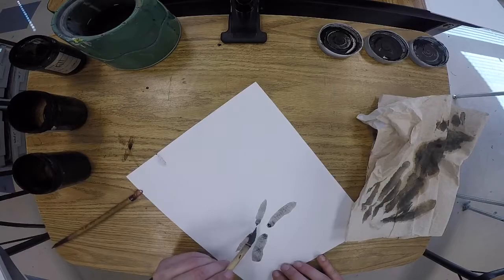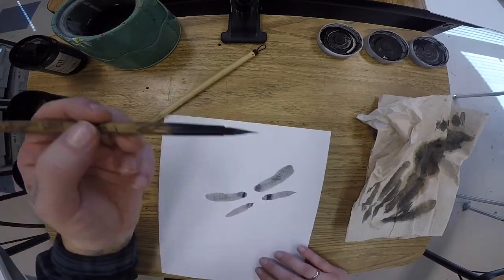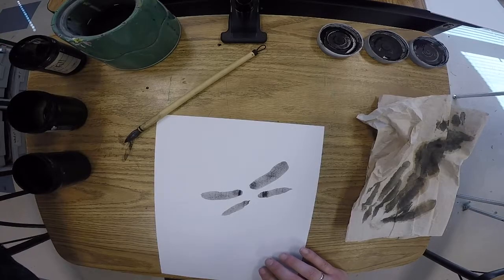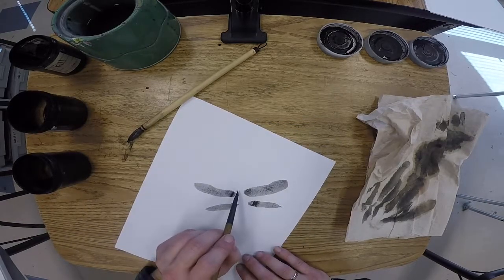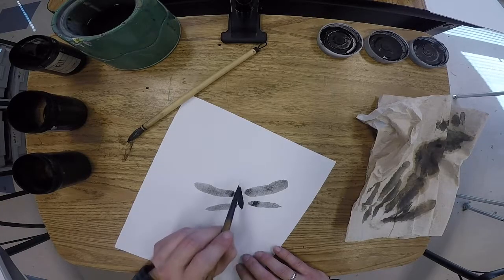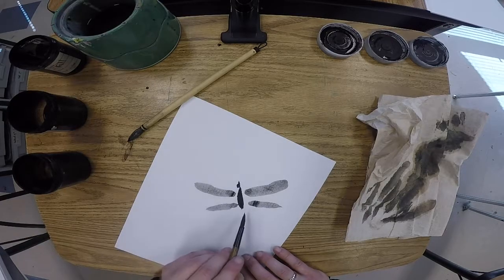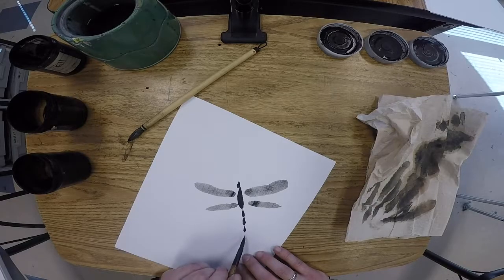Now for the body of our dragonflies, we want to use our smaller fude. For this part, we want to use our fullest, darkest, blackest value of ink. We want to make an abdomen, a head, and a long, nice dragonfly tail.